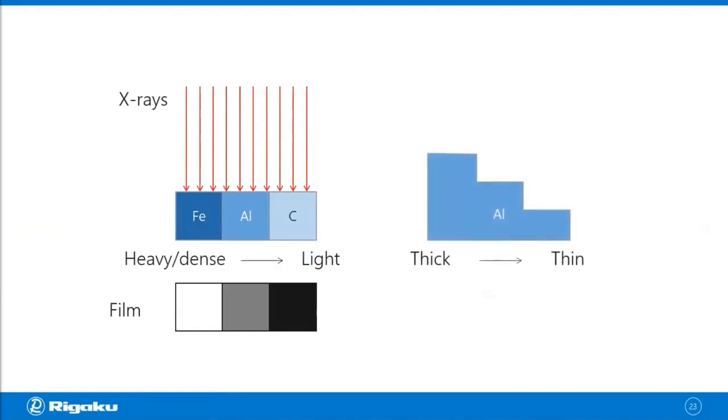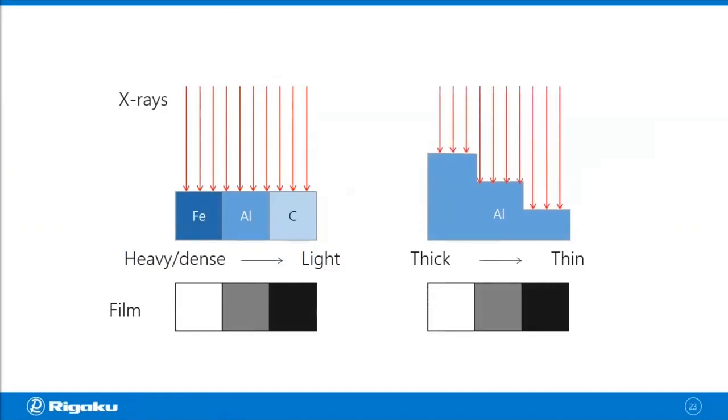And also thickness dependent. If you look at a sample like this, it's all aluminum but the thickness changes. If you put X-rays through it and put a film underneath, you're going to see something like this. This is because the thicker the object is, the more X-rays are absorbed. So you can see that the absorption rate is density dependent and also thickness dependent. That's how 2D absorption imaging works.